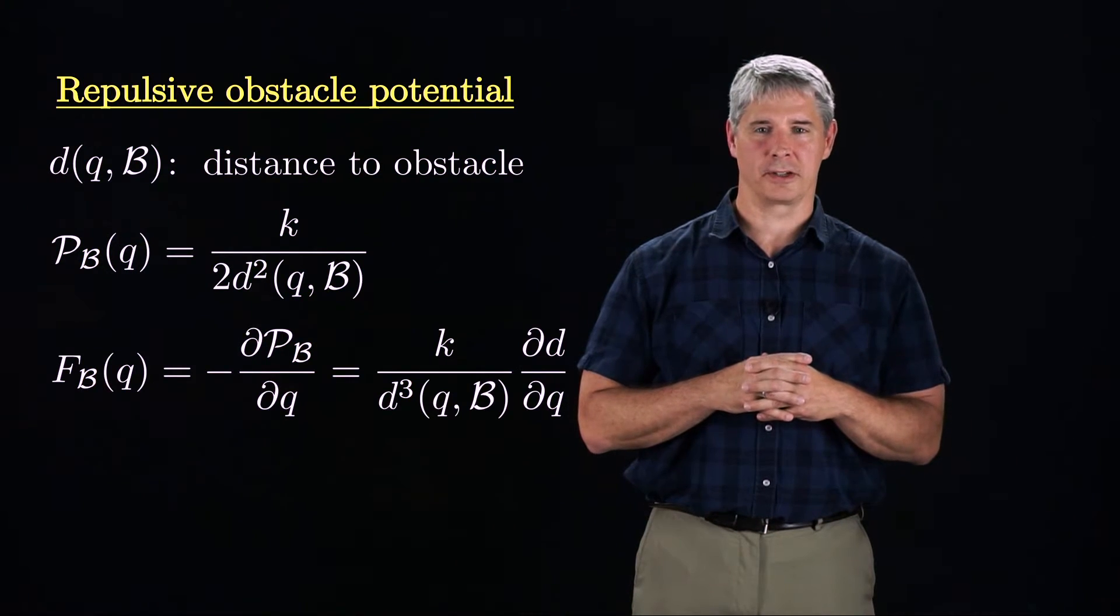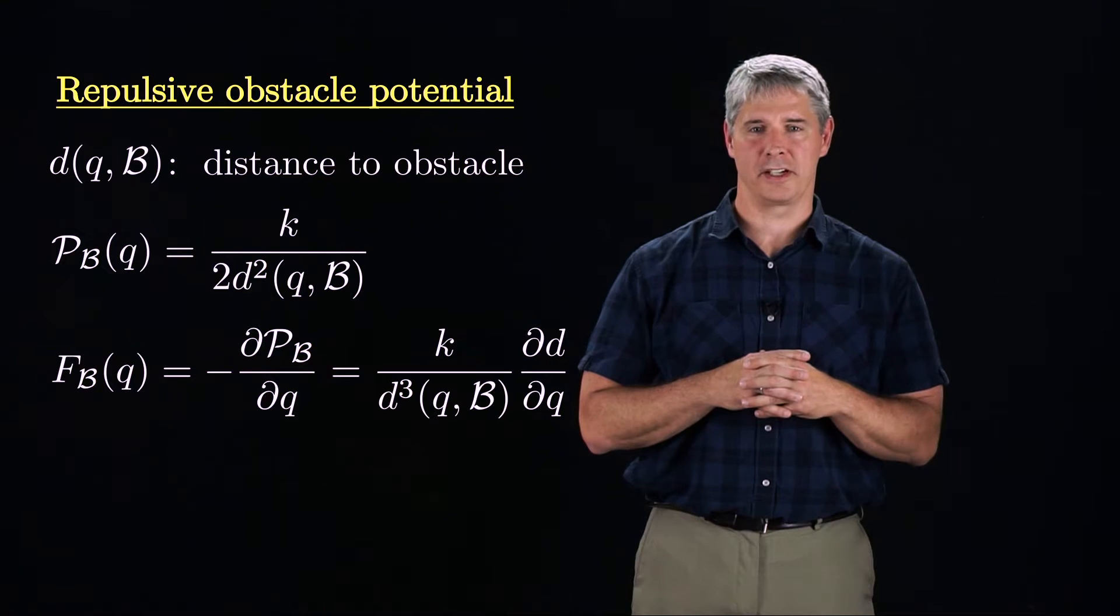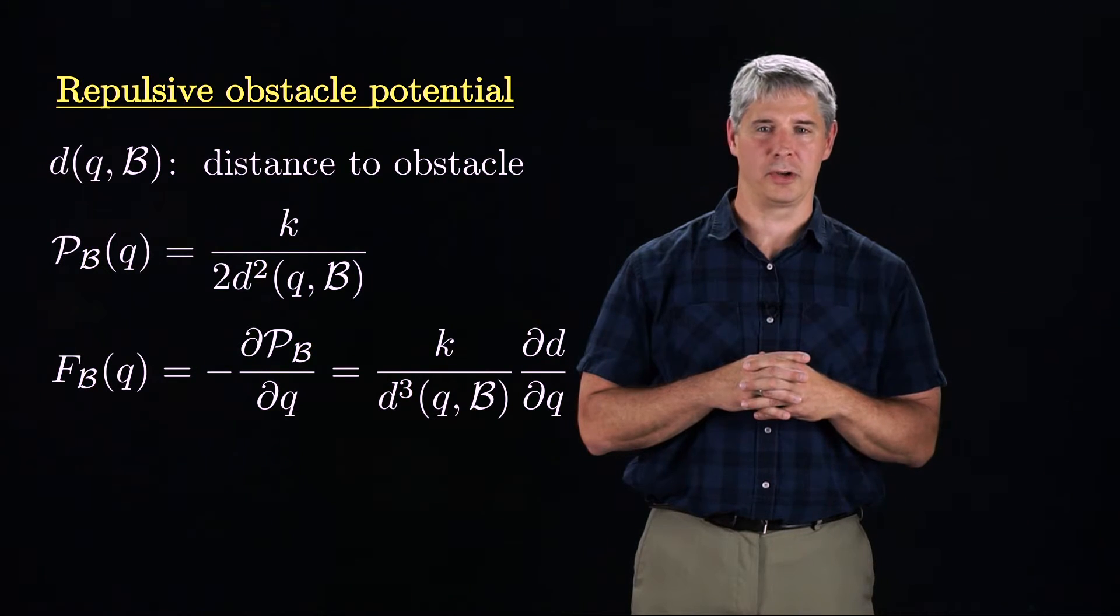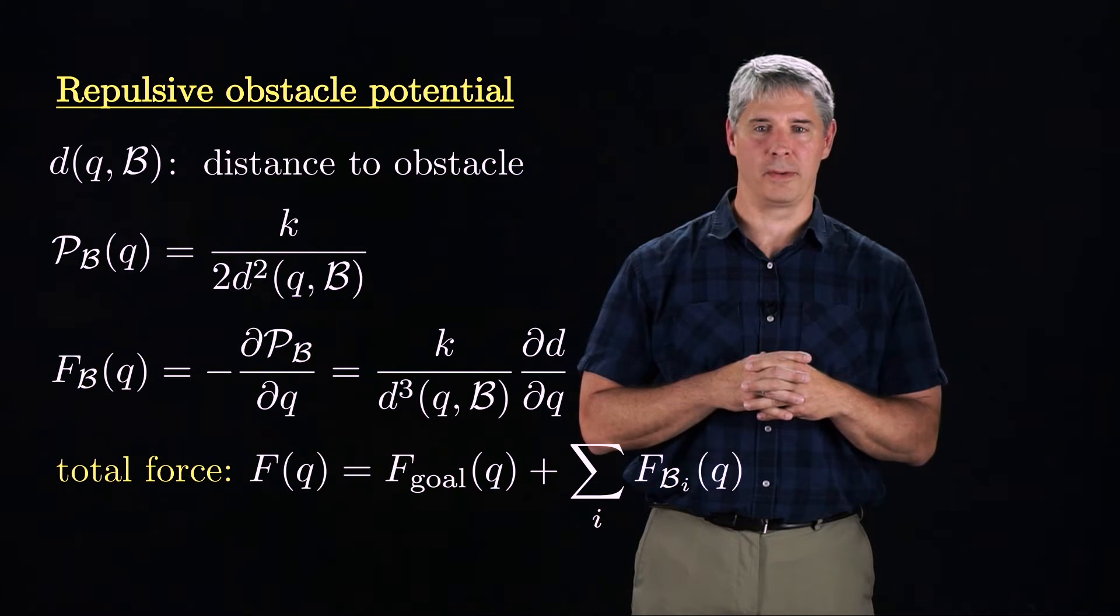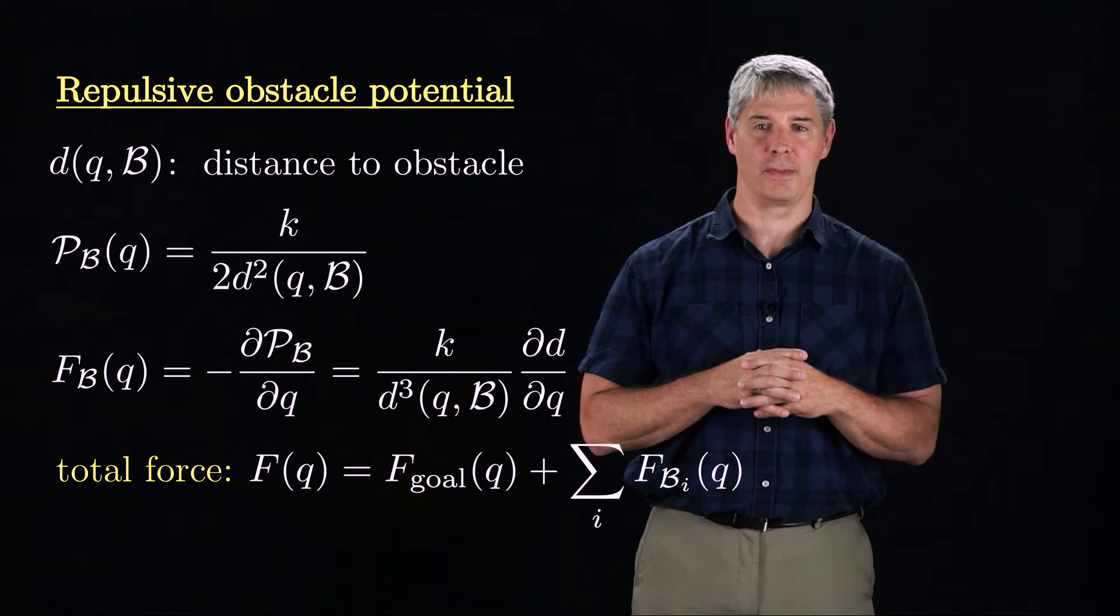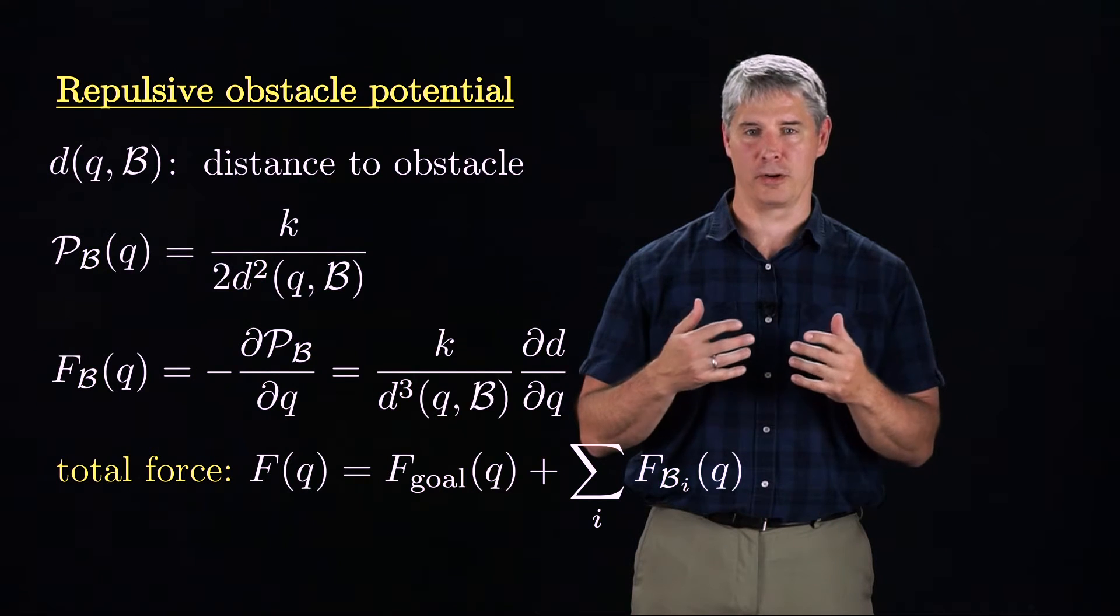The force due to the obstacle is the negative gradient, and it points in the direction in which the distance between Q and the C-space obstacle grows the fastest. The total force acting on the robot is the sum of the force attracting the robot to the goal, and the forces repelling the robot from the obstacles.